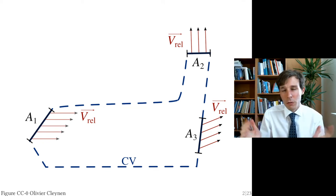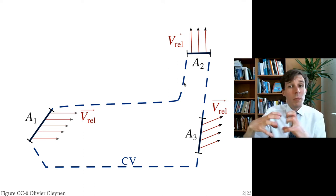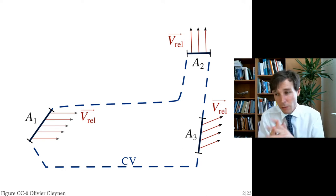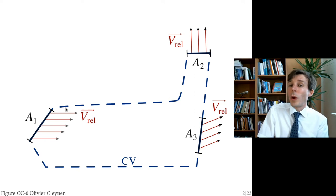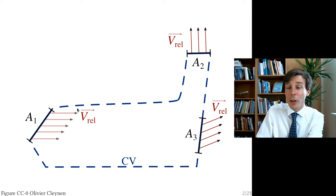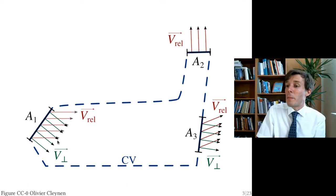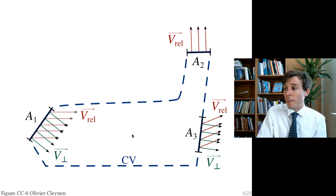Through this control surface — the control volume in blue could be expanding, contracting, or moving. The velocity of the fluid relative to the surface, V_rel at inlet one, could be uniform, for example. What is V_orthogonal, or what is V_rel dot N? We're looking for the component of V_rel that is perpendicular to the area. This is V_orthogonal, and it follows the direction of the flow — incoming when the flow is incoming, outgoing when the flow is outgoing.